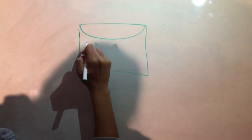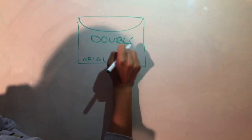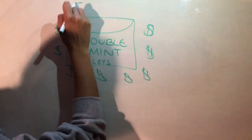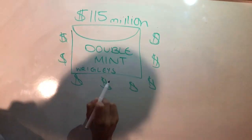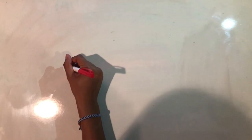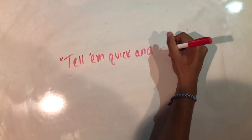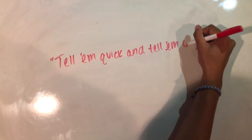The best-selling gum brand was Wrigley's Double Mint, accounting for sales of roughly 115 million U.S. dollars. Wrigley's Juicy Fruit and Wrigley's Spearmint rounded off the leading U.S. regular gum brands. Wrigley Jr. is also remembered as the father of modern advertising, coining the familiar maxim, tell them quick and tell them often.